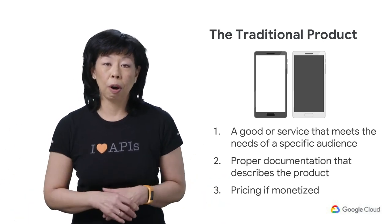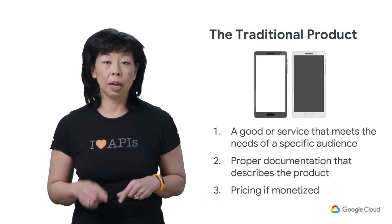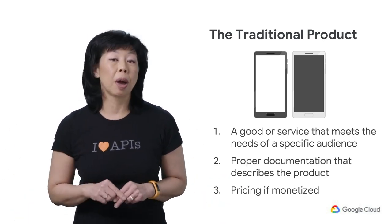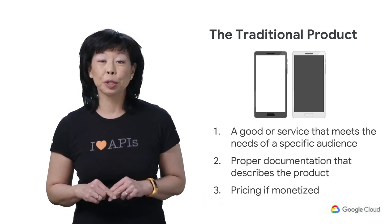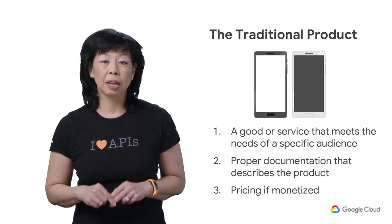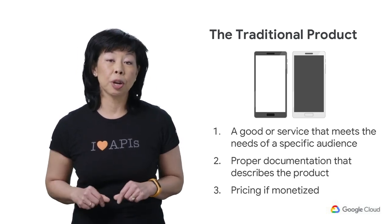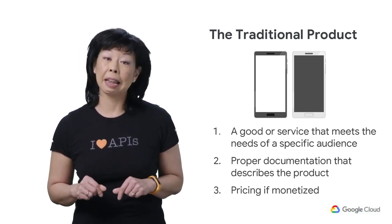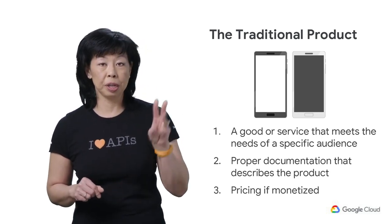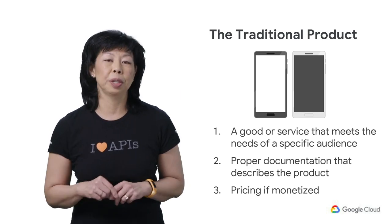The key components here are: one, a description of the product designed with the consumer in mind; number two, documentation on its use; and number three, pricing information.